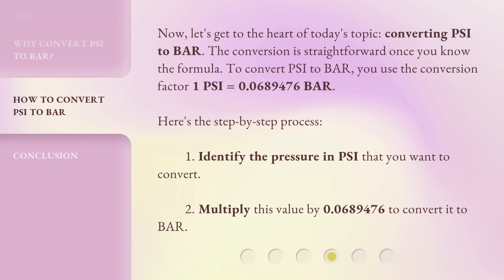Now, let's get to the heart of today's topic: converting PSI to bar. The conversion is straightforward once you know the formula. To convert PSI to bar, you use the conversion factor: 1 PSI equals 0.0689476 bar.